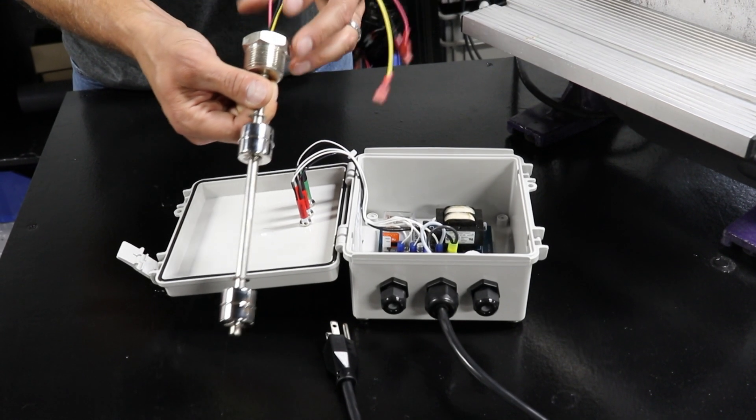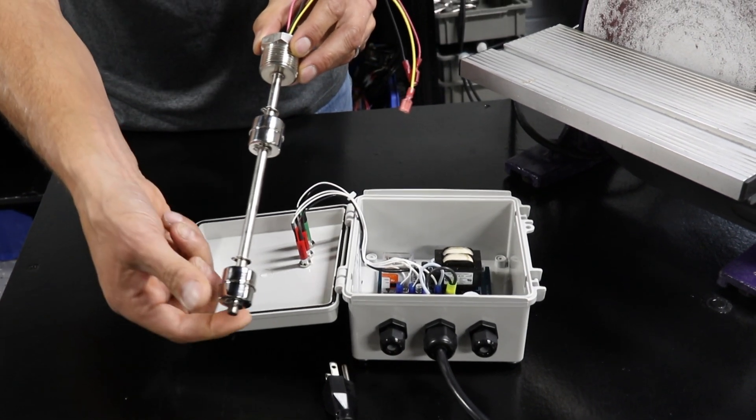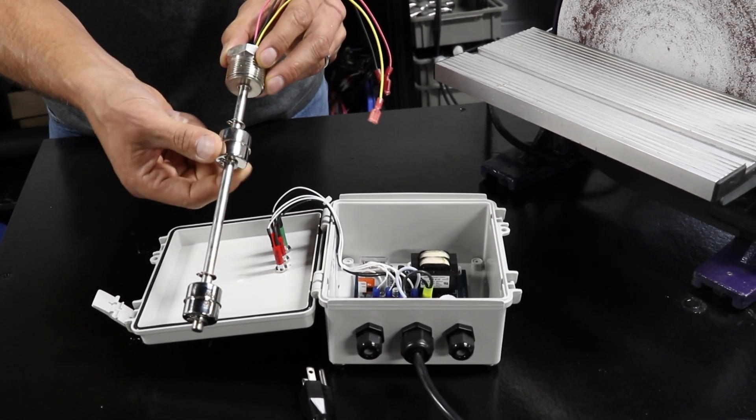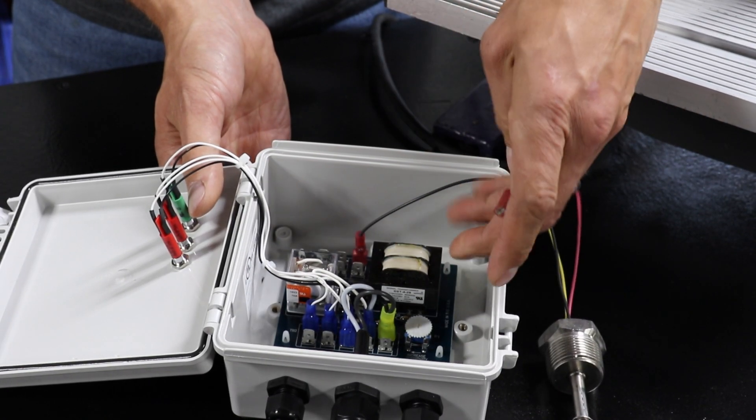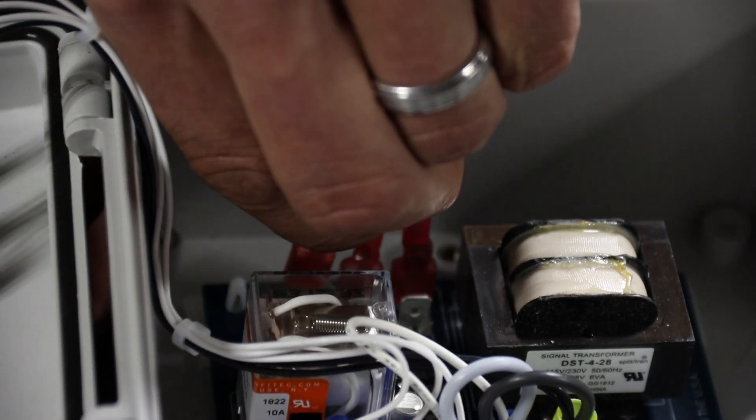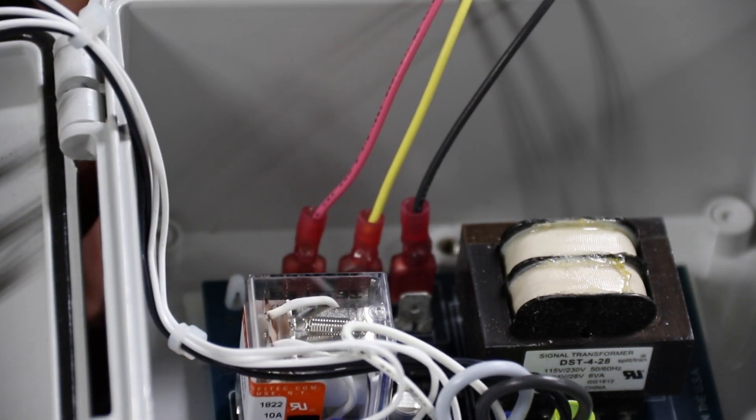What you see here is a basic two level common float switch. It has a low float and a high float and a three wire hookup. The black is the common wire which I'll hook up to this contact on the top row. The red wire is the low and the yellow is the high.